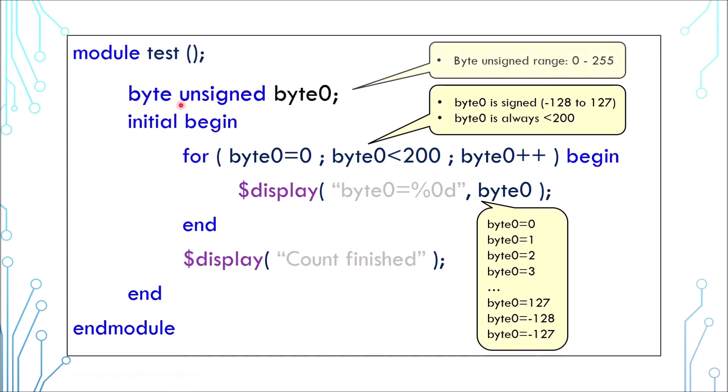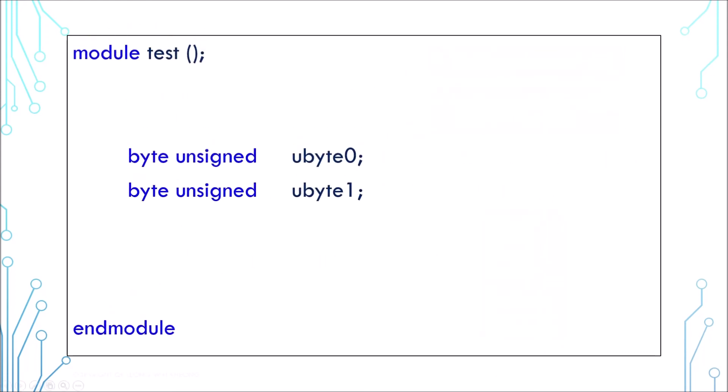Before we end this, I'd like to introduce another syntax. Look at this code—we have two unsigned bytes. If you're lazy—I mean, if you want to be very efficient and don't want to type the keyword unsigned so many times—you can use typedef to create a shorthand. In this case, byte unsigned is shortened to ubyte, and you can now use ubyte to create the variables.